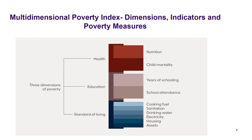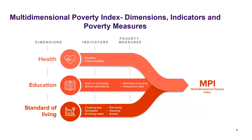For health, it is measured by nutrition and child mortality. For education, it is measured by years of schooling and school attendance. For standard of living, it's measured by access to cooking fuel, sanitation, drinking water, electricity, housing, and assets. We will use specific questions to measure each of these indicators. What we calculate at the end is the intensity of poverty or headcount ratio, which can be used as indicators for the MPI.